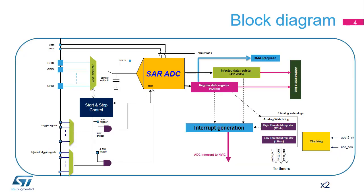This slide shows the general block diagram of the ADC. The main important subunits of the ADC are the power supplies and on-off control, the analog front end, the trigger logic, the digital back end including the analog watchdogs and the AHB-slave interface, and the clocking. The next slides detail all these subunits.